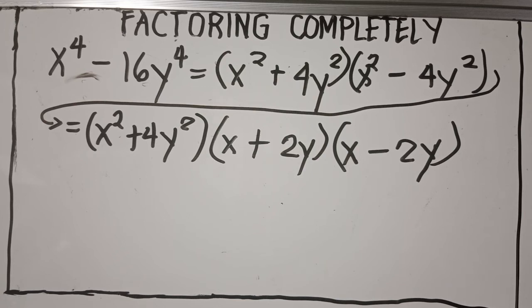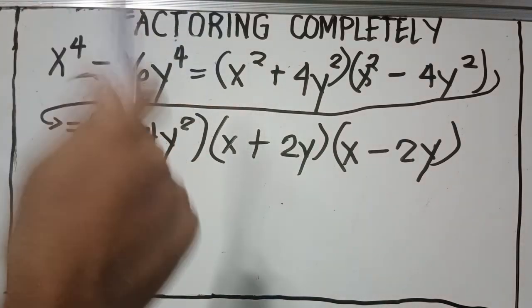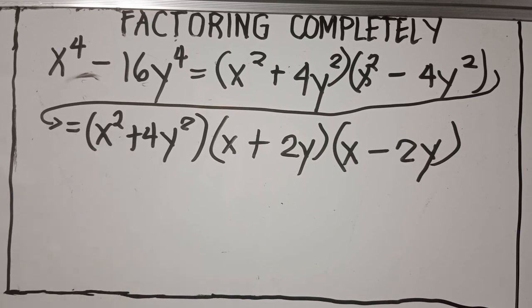That's how we factor out completely random expressions. You have to apply and recall your knowledge of different factoring techniques — common monomial factoring, difference of two squares, sum and difference of two cubes — any knowledge from previous lessons. Apply those techniques to arrive at a completely factored form. Thank you for watching, and I hope you've already subscribed to Sir Jason's Math Corner. See you in the next video!